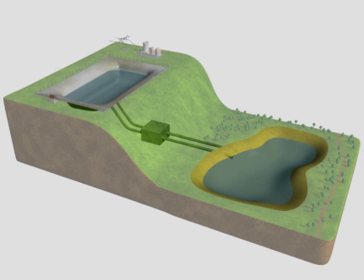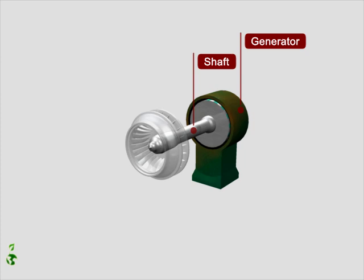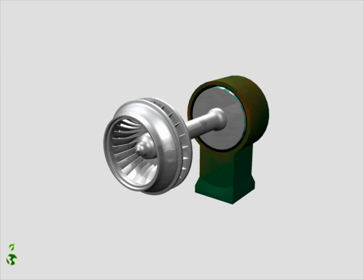Francis turbines are often used in pumped storage plants to create electricity. The generator, which produces electricity, is connected through a shaft to the runner of the turbine. The runner is composed of runner vanes that are curved.